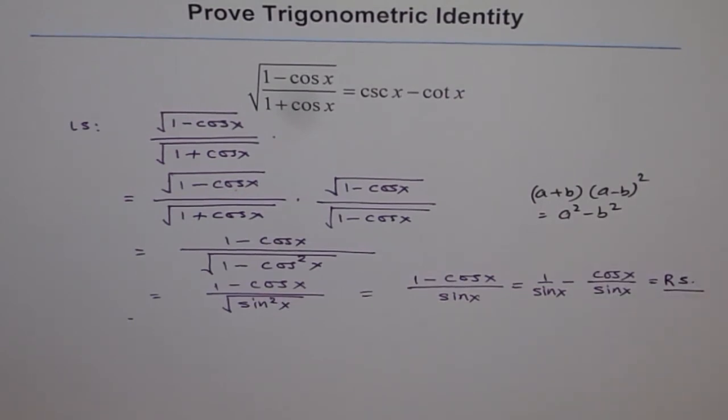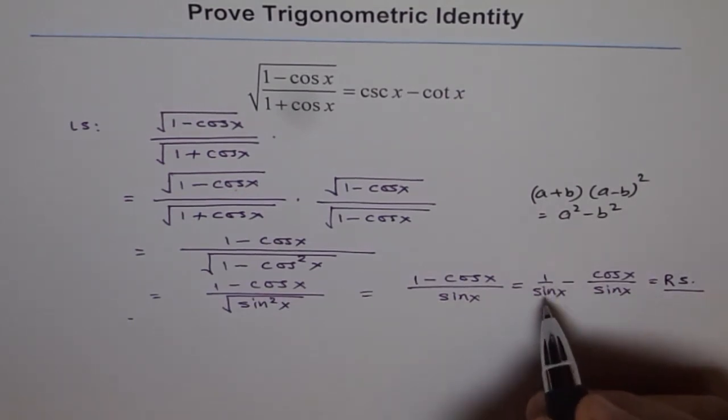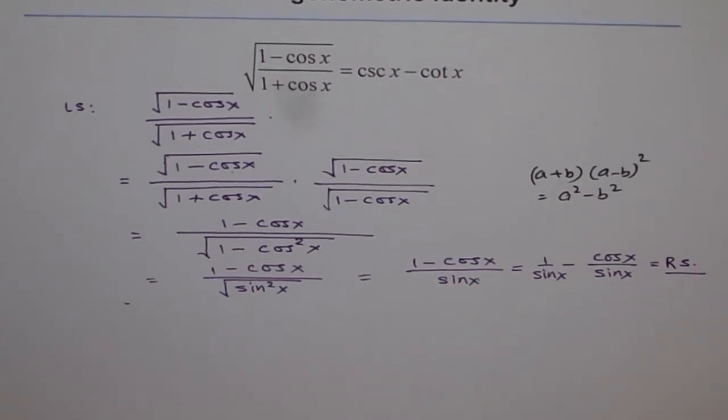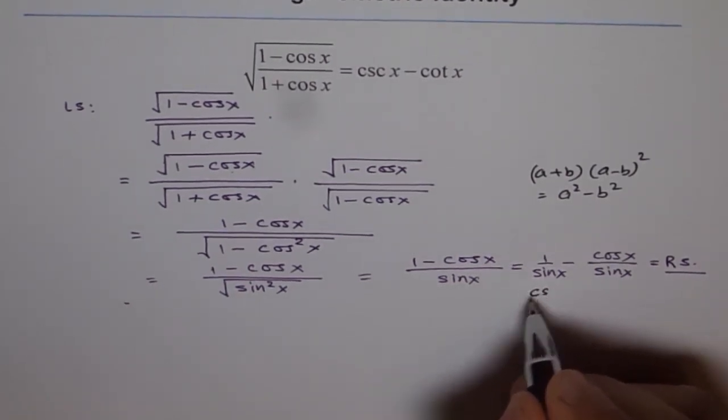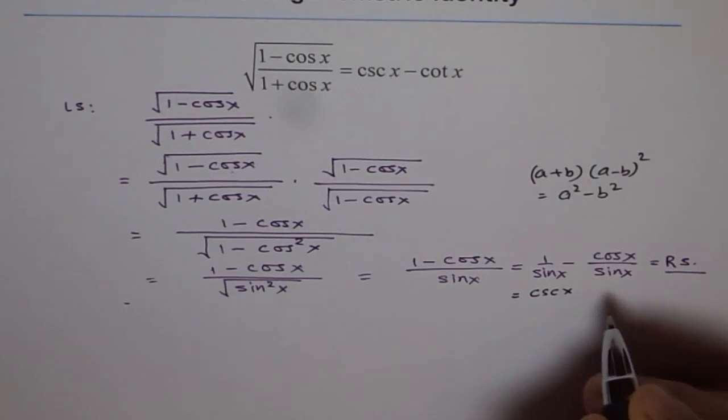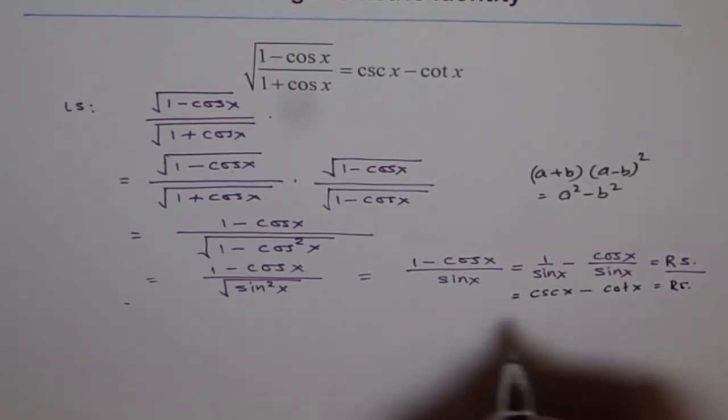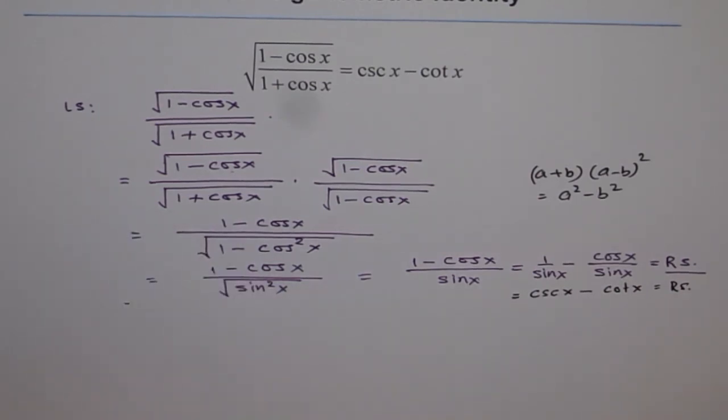Which is 1 over sine x is cosecant x minus cot x. So we have left side equals to right side and therefore the identity has been proved.